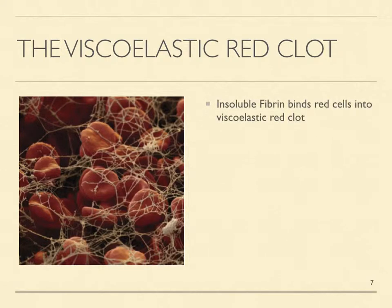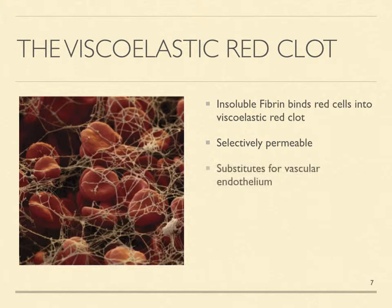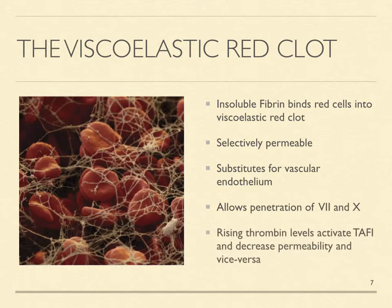Rising levels of insoluble fibrin bind red cells into a more permanent red clot that replaces the white clot and substitutes for the damaged vascular endothelium. The red clot stems blood loss, but its more important function is to regulate thrombin generation to optimize tissue repair. Like the vascular endothelium, the viscoelastic red clot is selectively permeable — it allows the penetration of factors VII and X, which interact with tissue factor in the damaged tissues and generate thrombin that energizes repair cell activity.